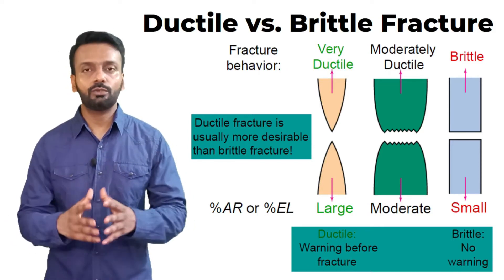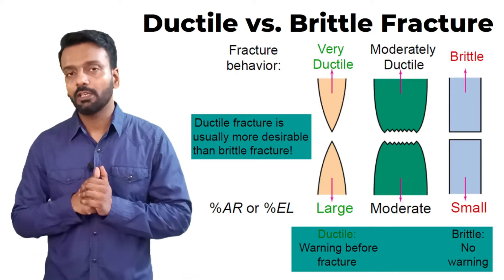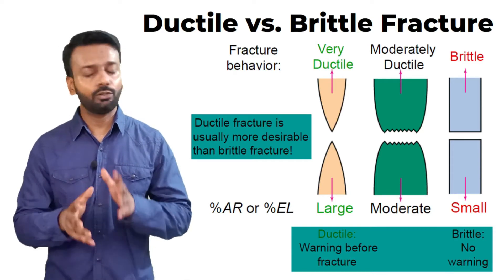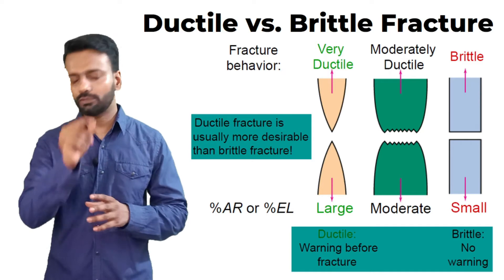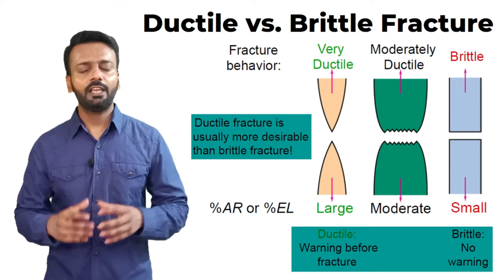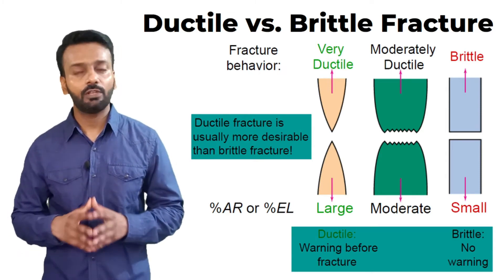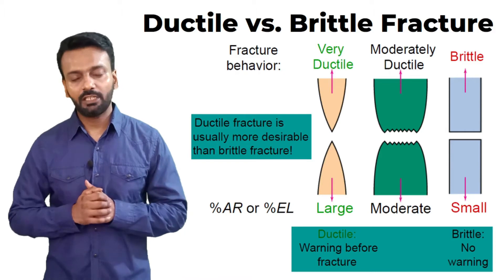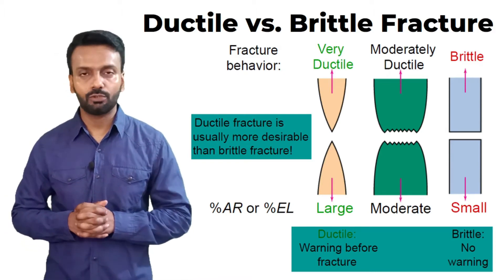We want to know that the material is failing — we want to get an intimation. Brittle material does not give that intimation. But on the other hand, when we see ductile material, it goes through necking, it goes through change in form, change in shape, and we can easily identify that the material will fail. This is highly desirable because we know the material is going to fail and we can replace that part or material.